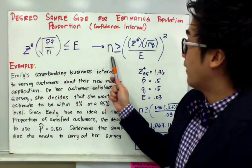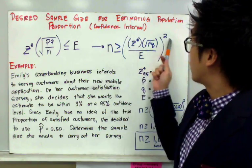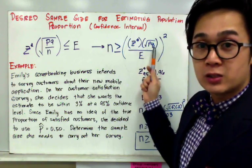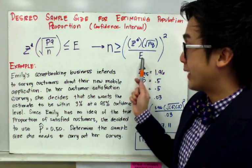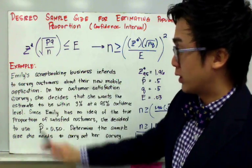If we derive the formula in finding the sample size, we'll have a formula of N greater than or equal to Z star times the square root of PQ all over E squared. Let's use this formula in our word problem.